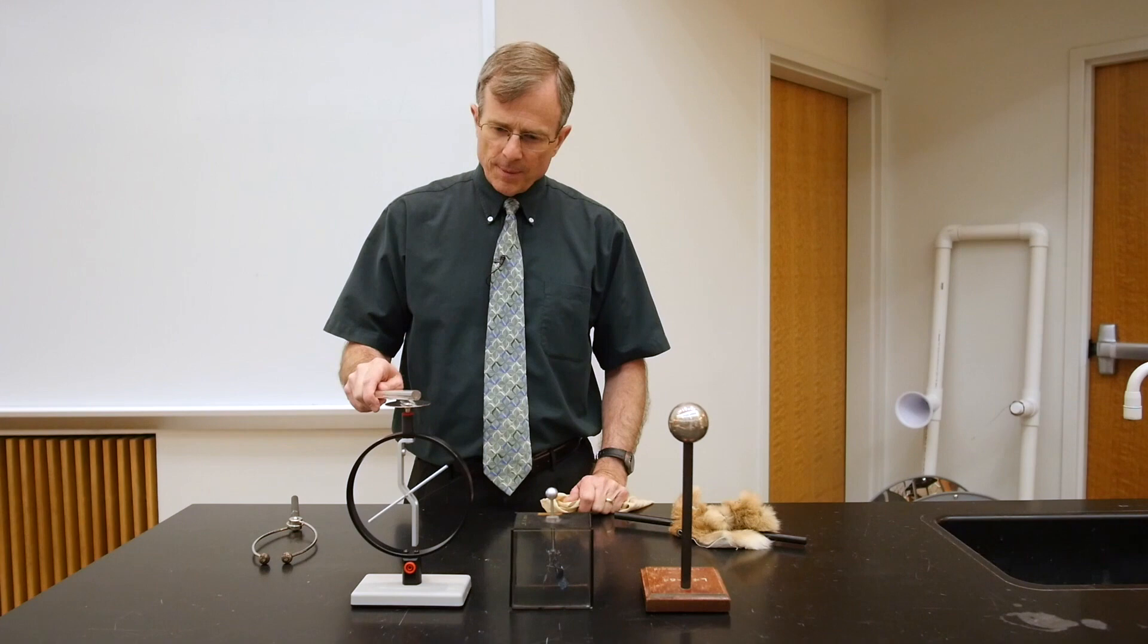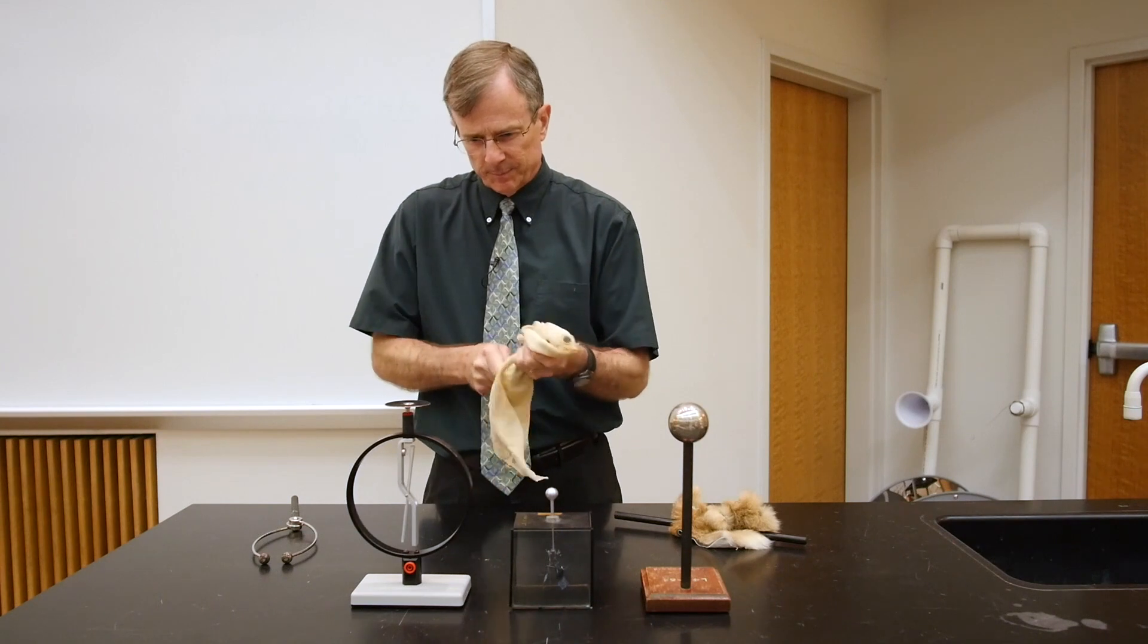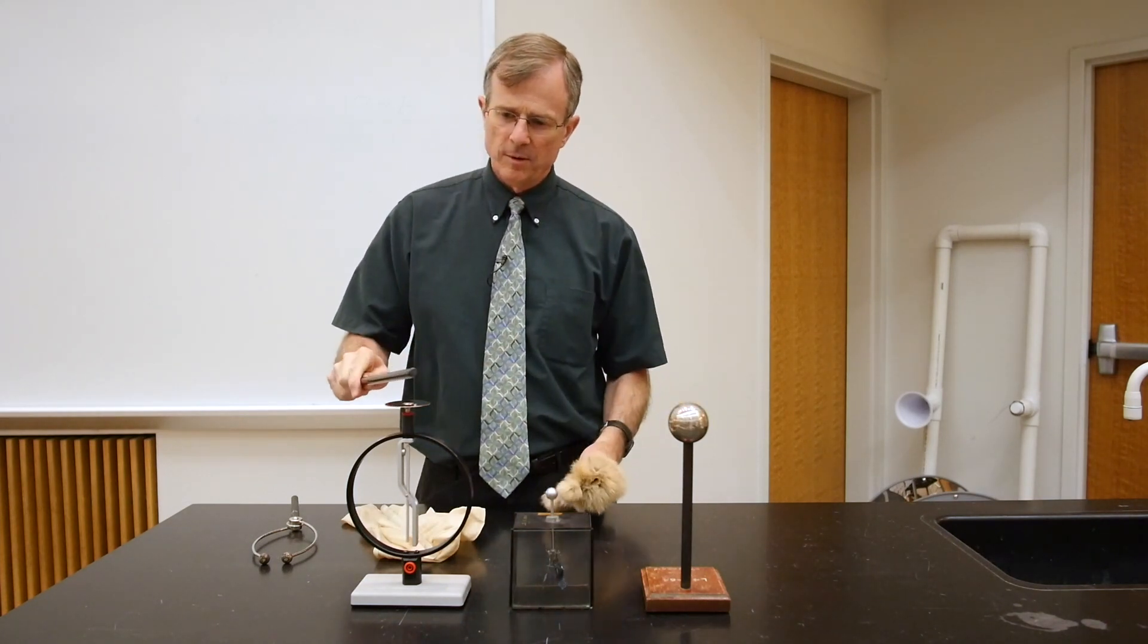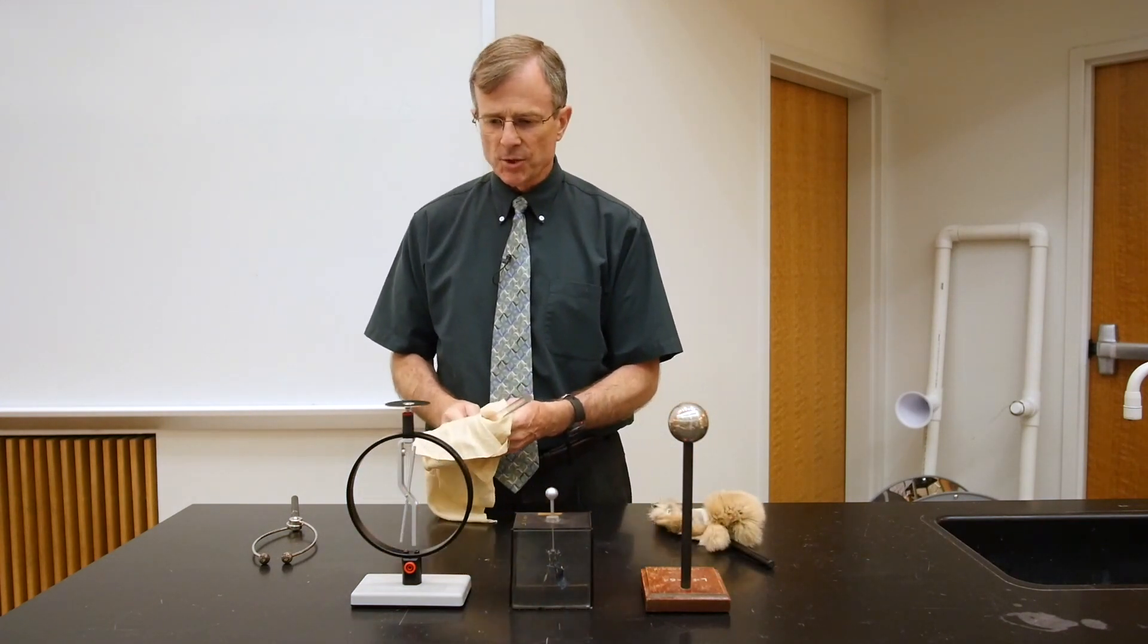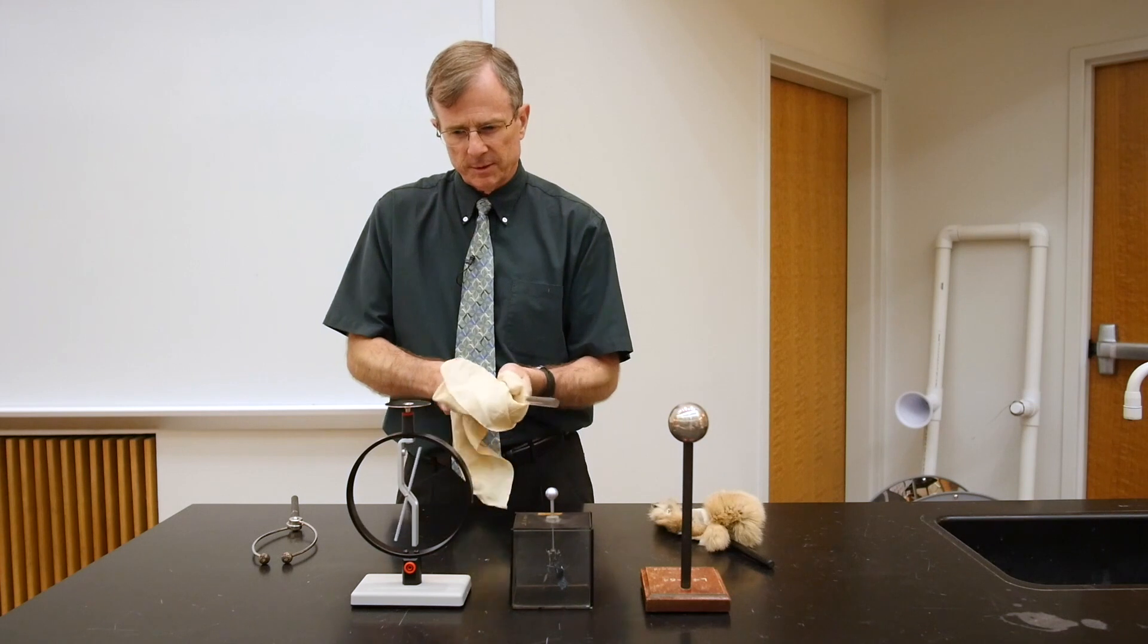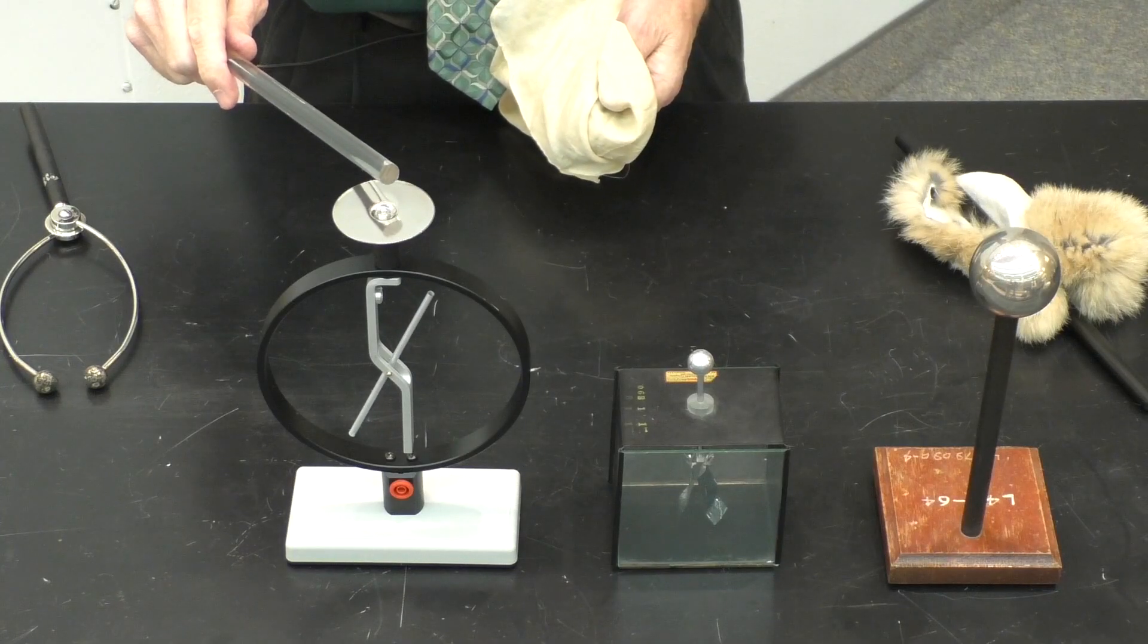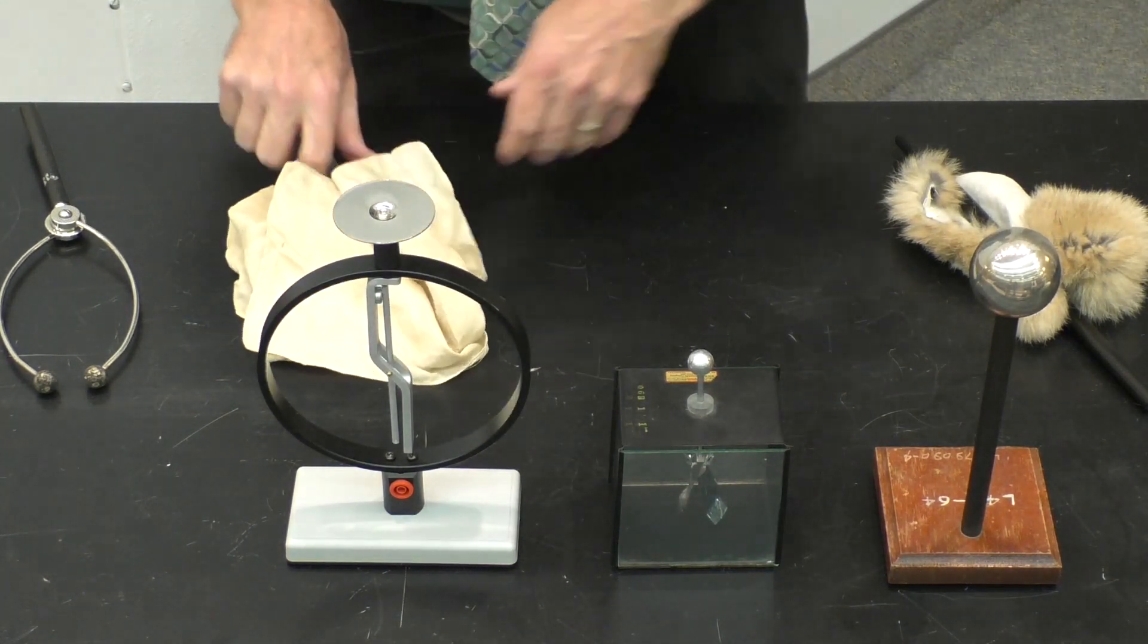And if we get this brawn electroscope charged up, actually what I'm going to do is charge it negatively, and then try and negate that charge with some positive charge. Let's let it settle there until it's happy.